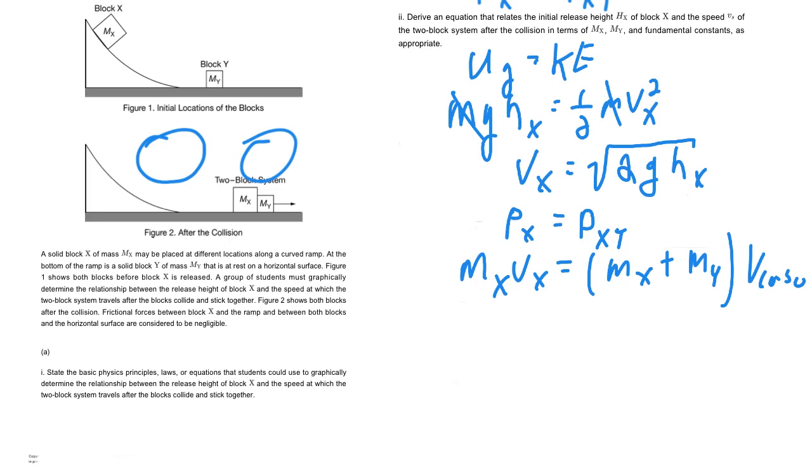So let's just finish up the algebra here. Remember VX, we'll go ahead and substitute VX into here. And we'll go ahead and divide by this MX plus MY. So our final answer should be V combo equals MX times the square root 2GH, all of this divided by MX plus MY.